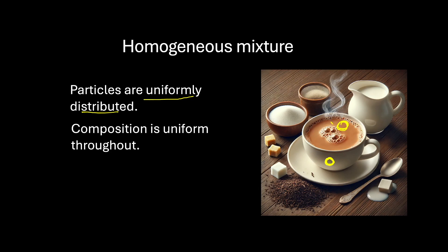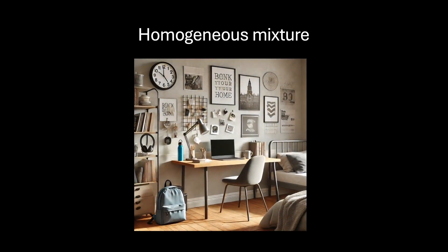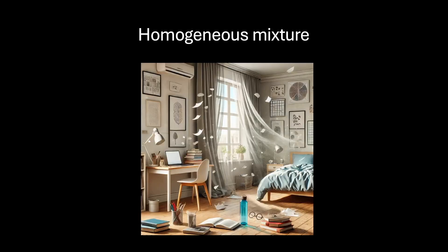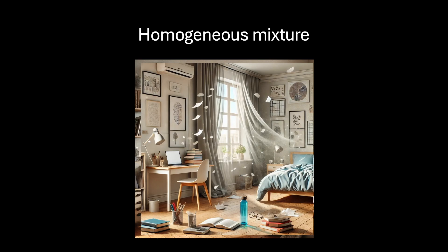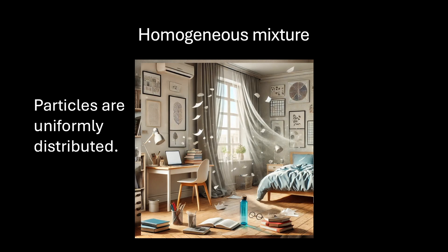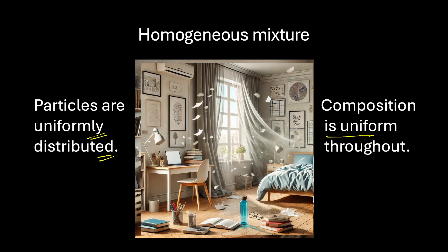Such a mixture can be called a homogeneous mixture. Another example of a homogeneous mixture: let's go back to your room and open the window to let the air come in. This air has various gases — maybe nitrogen, oxygen, hydrogen, helium, water vapours, etc. For air, we can say the particles are uniformly distributed and the composition is uniform throughout.